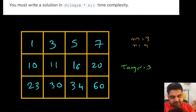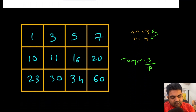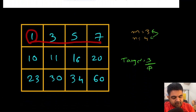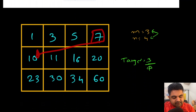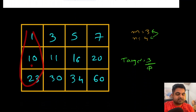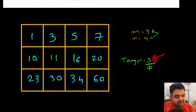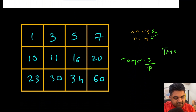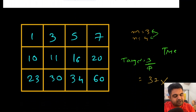Let's understand this with an example. Suppose we have a 3 × 4 matrix and the target value is 3. Every single row is in sorted order, and the last element of any row is smaller than the first element of the next row, making the columns sorted as well. In this case, 3 is clearly present inside the matrix so we return true. If the target were something like 37, which is not present, we return false.